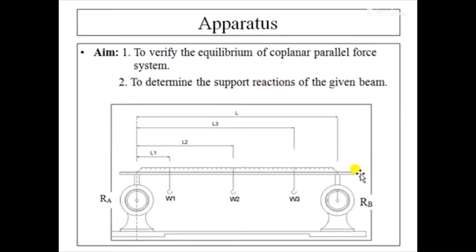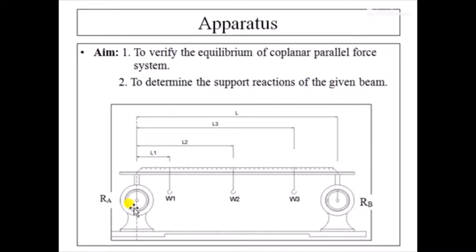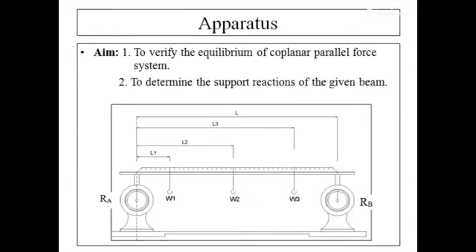We are going to determine the support reactions of this beam. We will hang three weights W1, W2, and W3 at different distances L1, L2, and L3 respectively from point A. The overall distance between point A and point B is L. When these weights are applied, the spring balances at A and B show the reaction forces Ra and Rb acting in the upward direction.